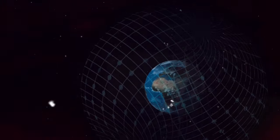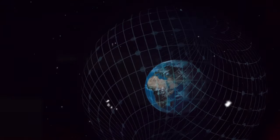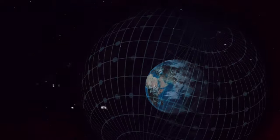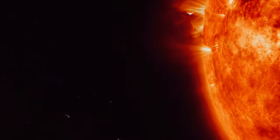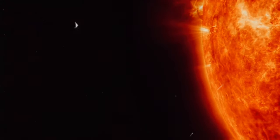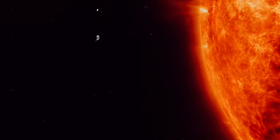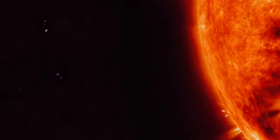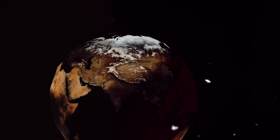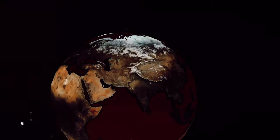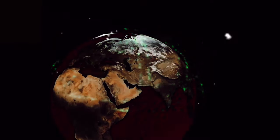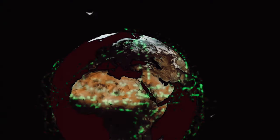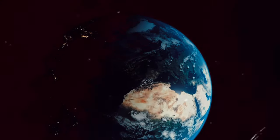This magnetic field is not just for show. It's a protective shield that prevents harmful solar radiation from reaching the surface, making life as we know it possible. Without it, our atmosphere would be stripped away by solar winds and the surface would be bombarded with high levels of radiation. So we've established the Earth's core is complex, but how does it rotate?